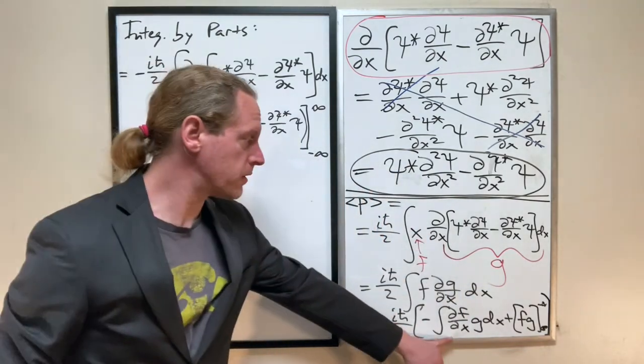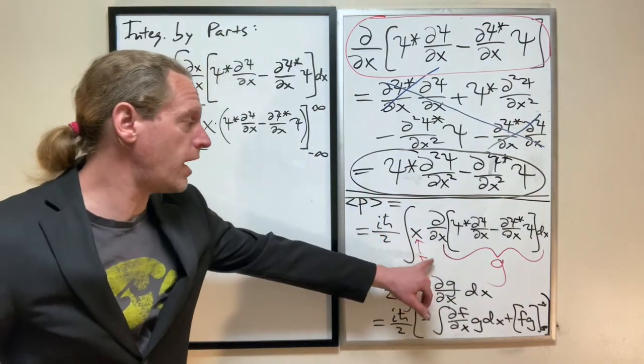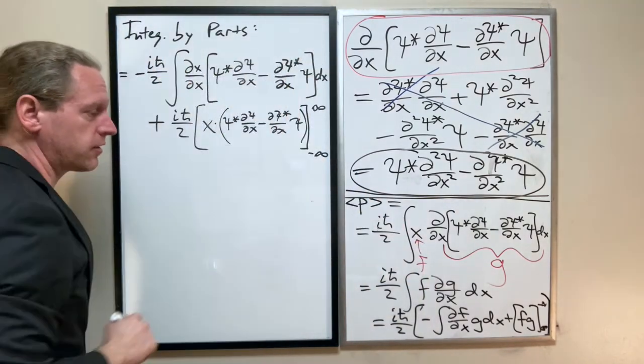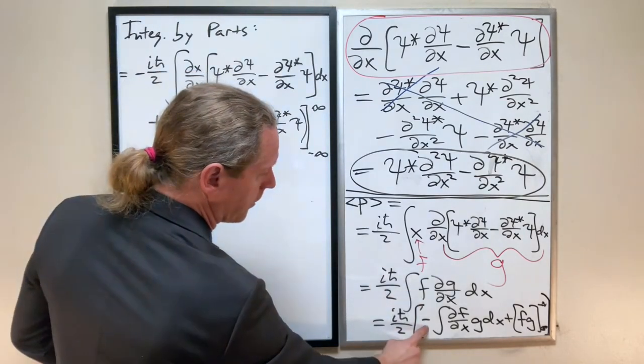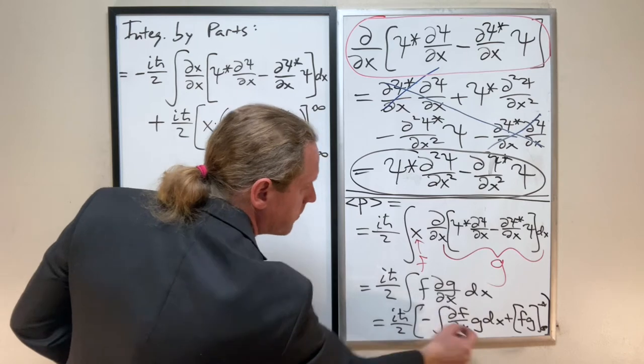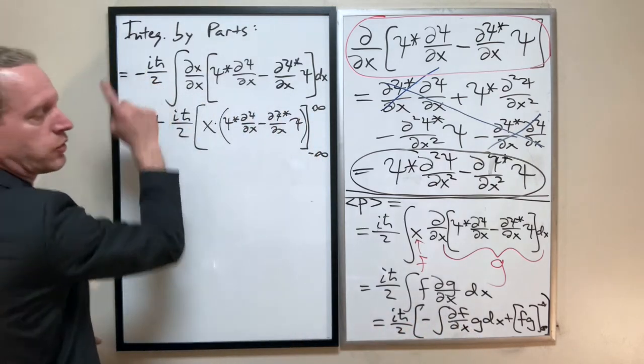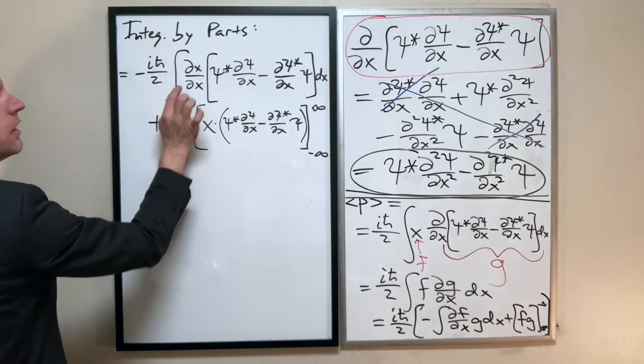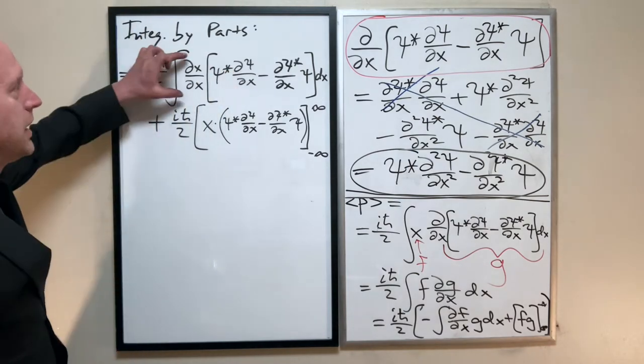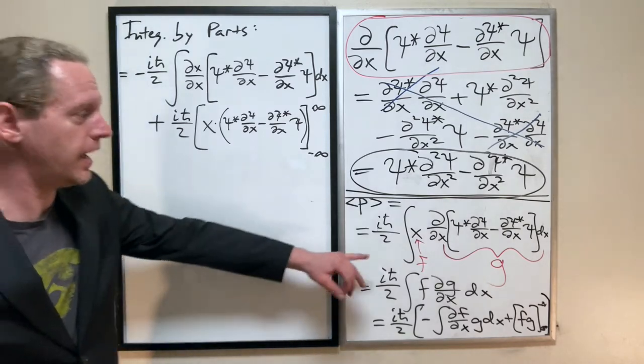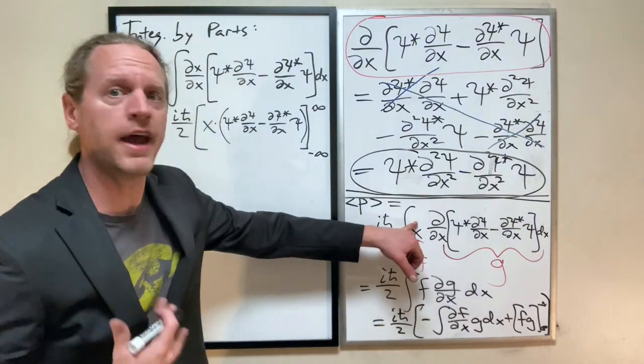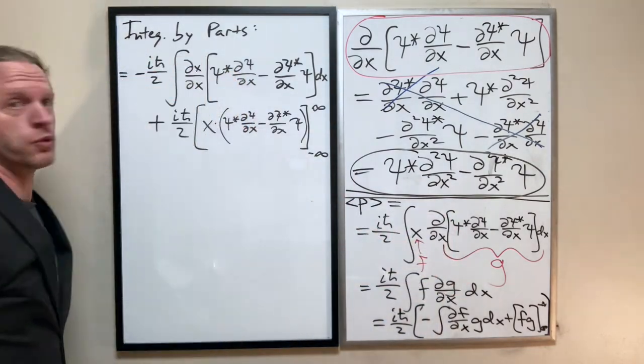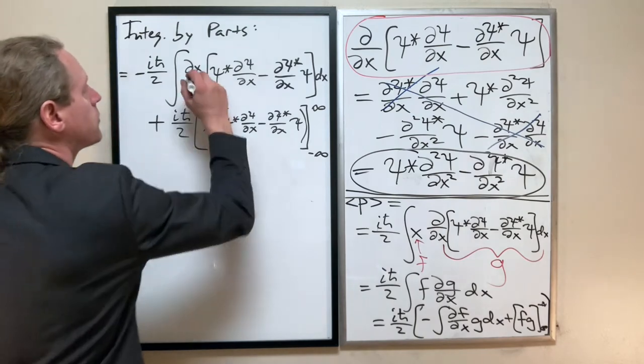So, integrating that by parts, keeping in mind our function f is just x. We get something that looks like this. And remember, that negative sign there, in flipping the derivative, we do introduce a negative sign, so I was careful to keep track of that. So, I have minus iℏ/2, times... Now, notice immediately that the whole purpose of doing that integration by parts is to get rid of that x. So, we've just flipped that d/dx onto the x, which cancels itself out. So, this is just 1.